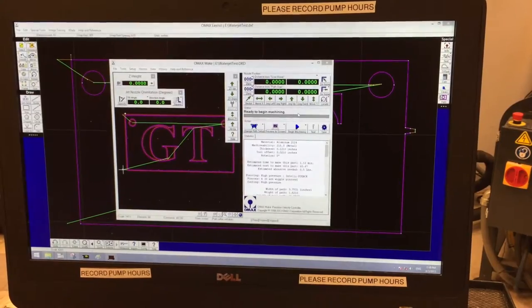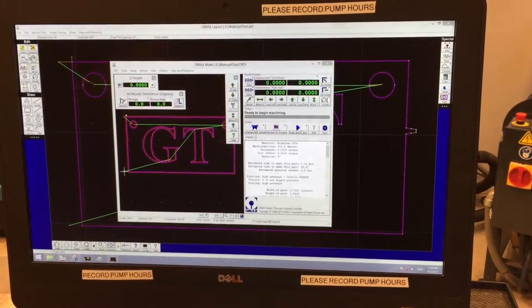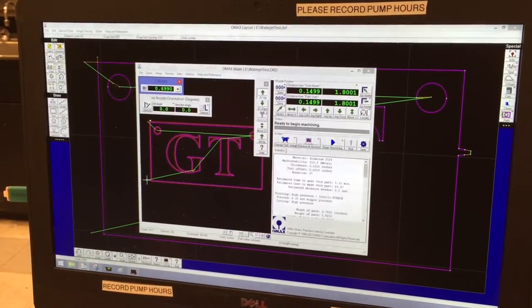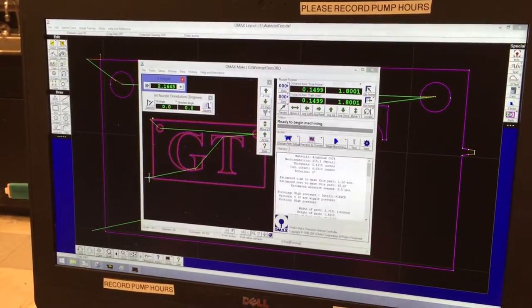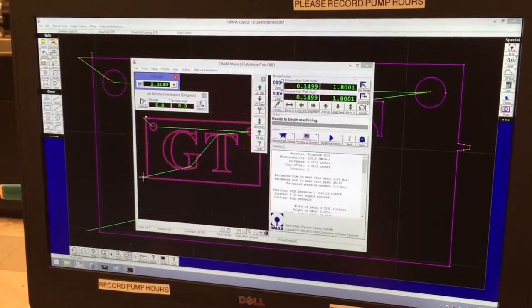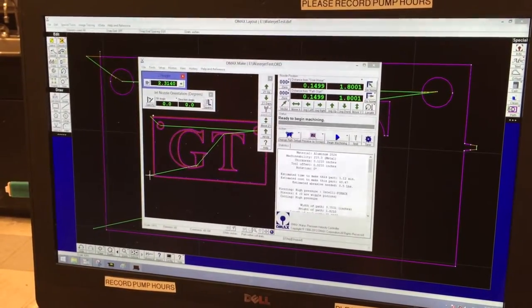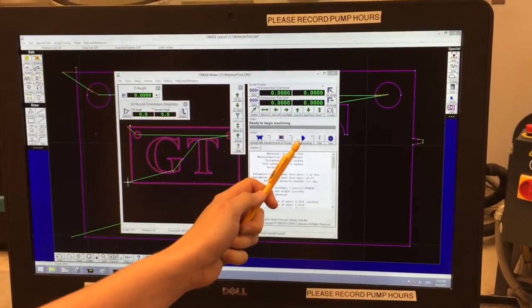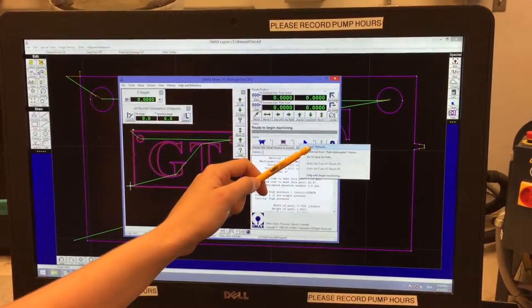Before you cut your part, it's a good idea to run what's called a dry run. Before you begin your dry run, raise the Z height to roughly two inches. This will make sure that the nozzle is clear of any possible obstacles. To do this, right click on Begin Machining and click Begin Default.